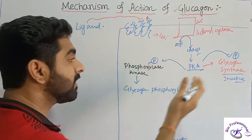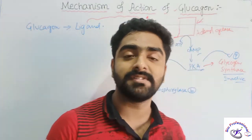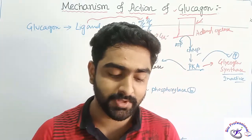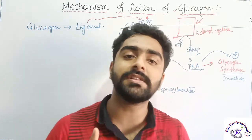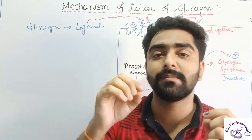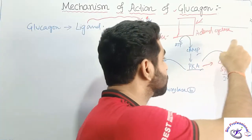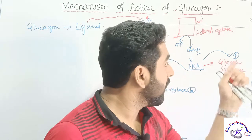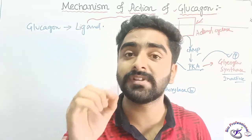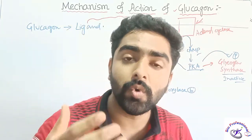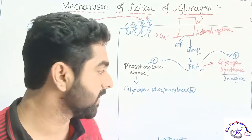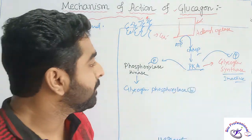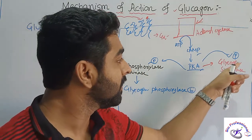When a phosphate group binds, conformational changes occur and the enzyme becomes non-functional. So when PKA phosphorylates glycogen synthase, it becomes inactive. PKA also phosphorylates phosphorylase kinase, which becomes active. So glycogen synthesis is inhibited while glycogen breakdown is being activated.